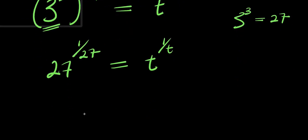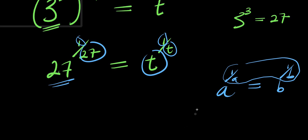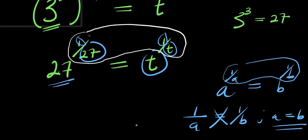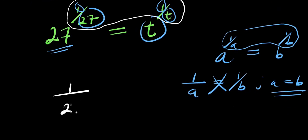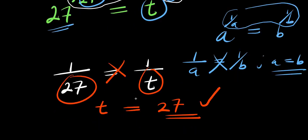Now we have achieved something very remarkable, because the base here is the same as what we have here, and the exponent structure is the same. So if you have a to the power of 1 over a equals b to the power of 1 over b, I can decide to equate the exponents: 1 over a equals 1 over b, and cross-multiplying gives a equals b. So that is exactly what I'm going to do here — I'm going to equate the exponents. I'm going to have 1 divided by 27 equals 1 over t. Cross-multiplying: t equals 27. So this is our value, t equals 27.